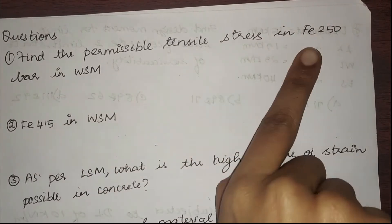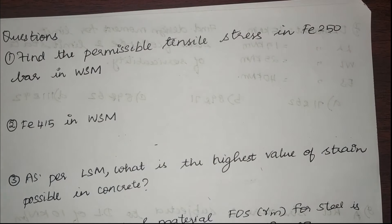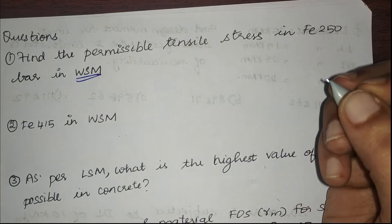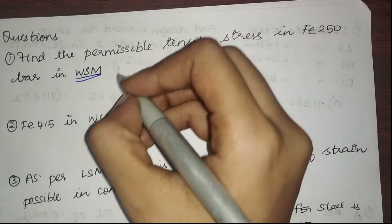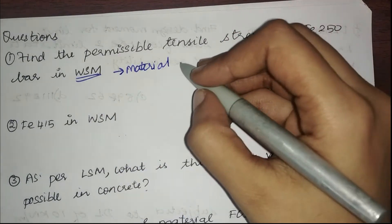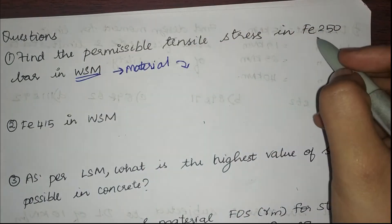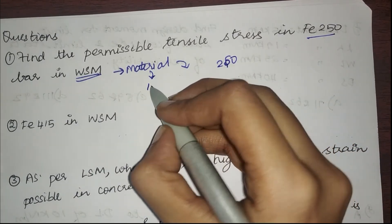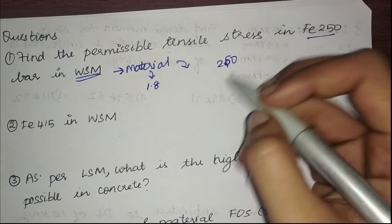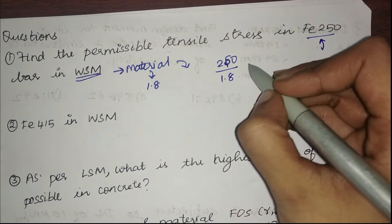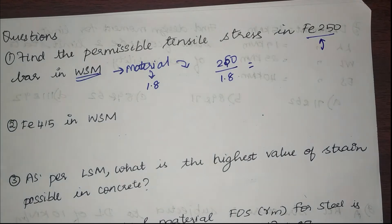Starting with the first question: find the permissible tensile stress in Fe250 bar using the working stress method. In working stress method, I only have a partial safety factor for materials — there is no factor of safety for loads. The steel is Fe250, so the characteristic strength is 250 MPa, and the material factor of safety for steel is 1.8. We reduce its carrying capacity, so it is 250 divided by 1.8 to get the permissible tensile stress.